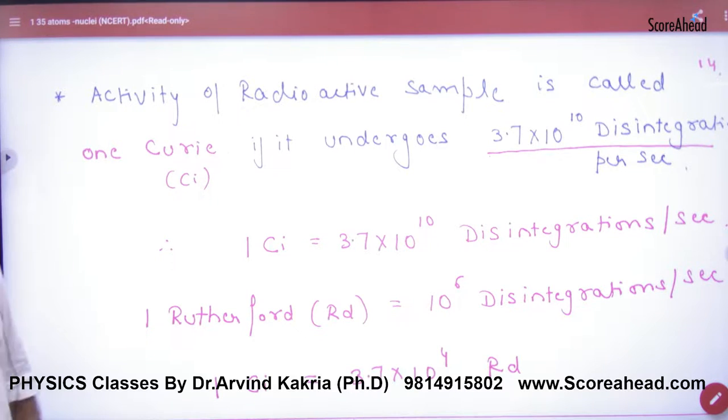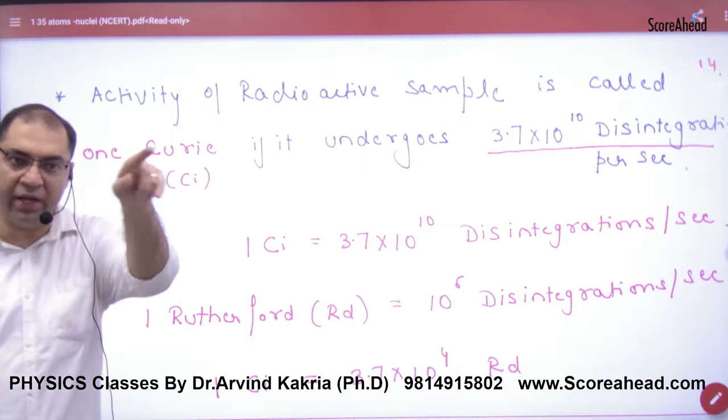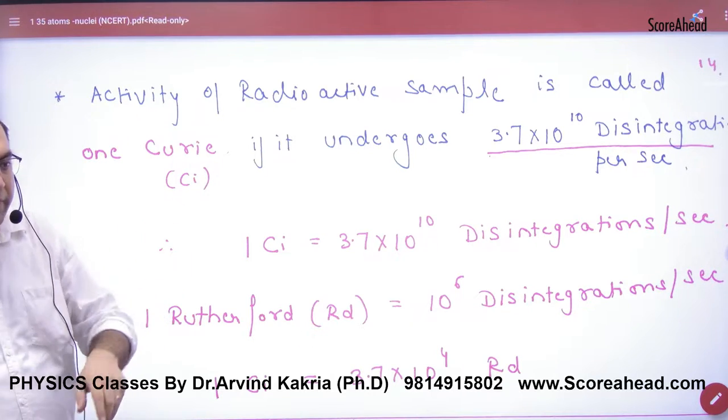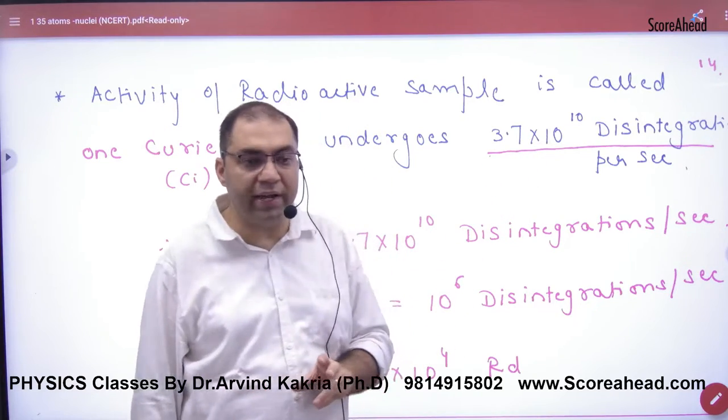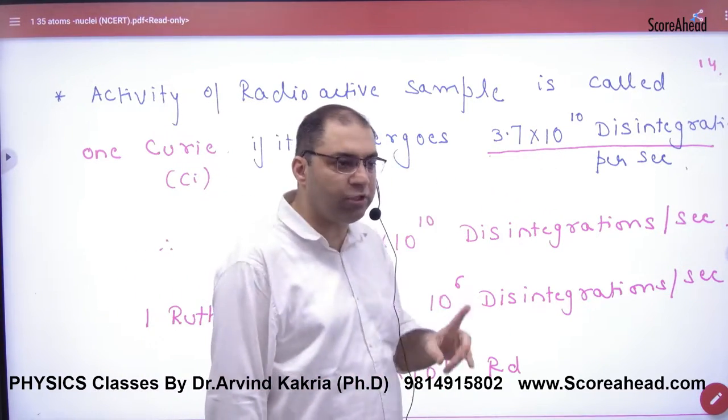Activity of radioactive sample is called one curie. Activity R, remember R was lambda n or dn by dt. One curie is when 3.7 x 10 to the 10 disintegrations per second. So in 1 second, if this atom is broken, one curie is made.